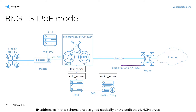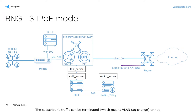IP addresses in this scheme are assigned statically or via a dedicated DHCP server. The subscribers' traffic can be terminated, which means VLAN tag change, or not.